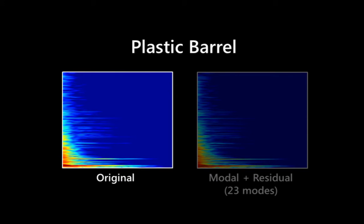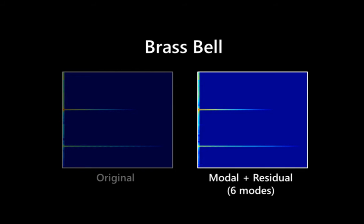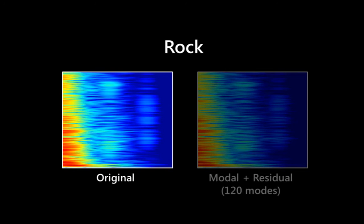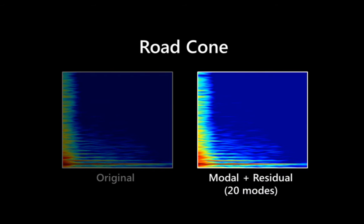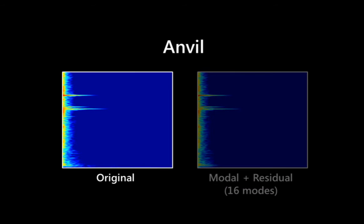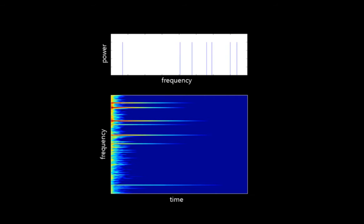Our modal synthesis can represent a variety of sounds. We simulate the variation in sound obtained by hitting an object in different locations by randomizing the amplitudes of each mode. Here is the original sound and several variations.